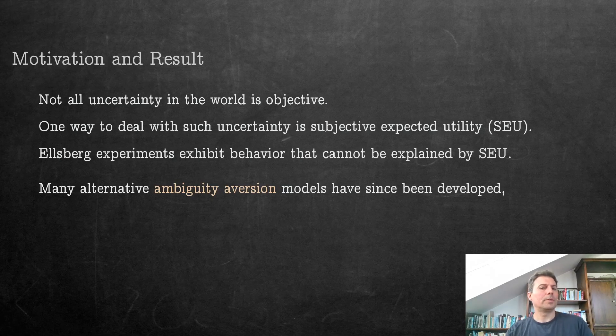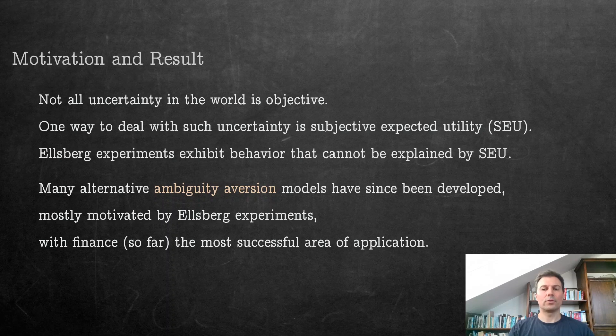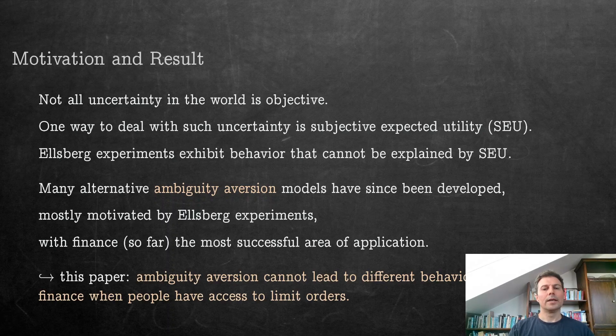Since then, many alternative models of ambiguity aversion have been developed, mostly motivated by these experiments. Finance, I think, is so far clearly the most successful area of application. But what we are going to say in this paper, however, is that ambiguity aversion cannot lead to different behavior than subjective expected utility in finance when people have access to limit orders.